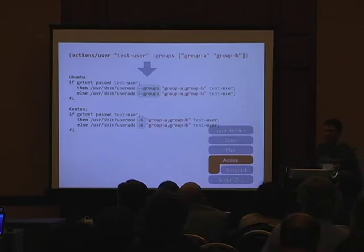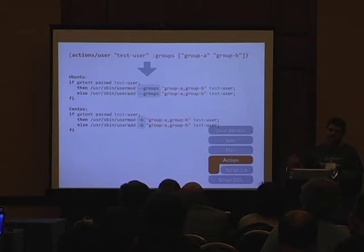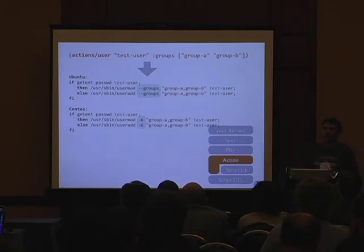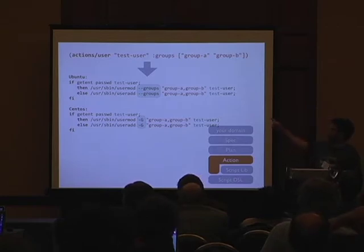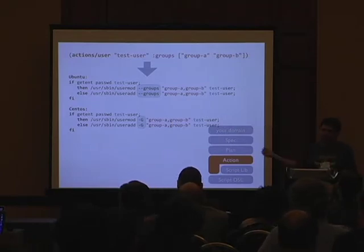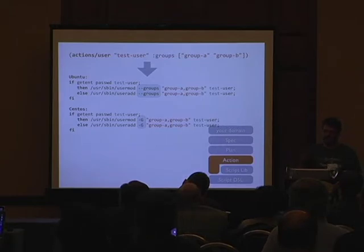At a higher level of abstraction we have actions — things you do on the server. Actions are discrete; an action can be a script or a set of actions that eventually end up as scripts. Actions use what we call version dispatch, which is a multi-method that dispatches on the OS family and OS version, and it's open for extensibility. For example, creating a user is pretty much the same between Ubuntu and CentOS but changes slightly. If tomorrow CentOS changes the syntax again, you can just declare the method for that OS type and it will override the defaults in Pallet. So you can extend Pallet to support OSes we haven't thought of.